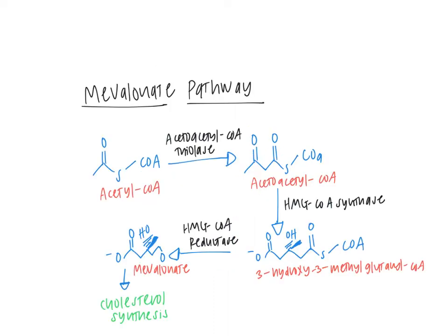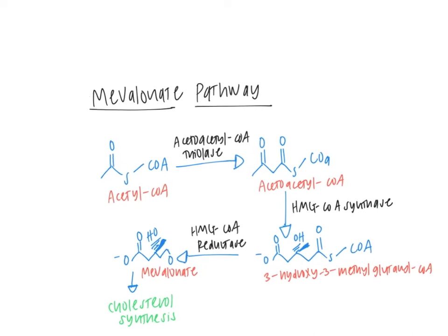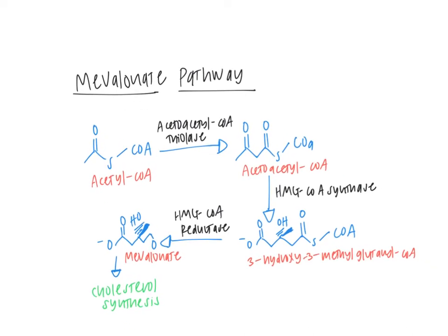As seen here, the mevalonate pathway begins with acetyl-CoA, which through a series of reactions becomes converted to hydroxymethylglutaryl-CoA, or HMG-CoA. Then, through HMG-CoA reductase, HMG-CoA becomes reduced to mevalonate, which leads to a series of reactions that is ultimately responsible for the production of cholesterol.